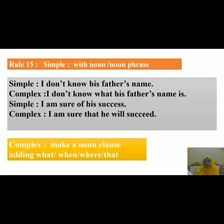Rule number 15 deals with simple sentences containing a noun or noun phrase. Look at the example: 'I don't know his father's name.' To make it complex: 'I don't know what his father's name is.' The noun phrase 'his father's name' has been turned into a clause: 'what his father's name is.' Another example: 'I am sure of his success.' The complex form: 'I am sure that he will succeed.' So if you find a simple sentence with a noun or noun phrase, turn the phrase into a noun clause by adding 'what', 'when', 'where', or 'that' to make it a complex sentence.